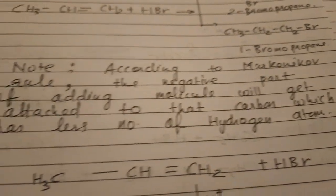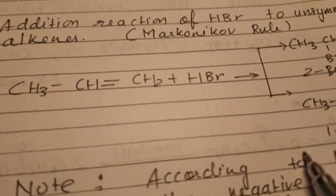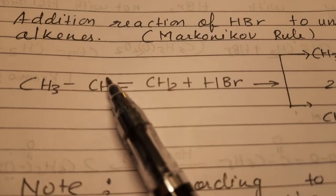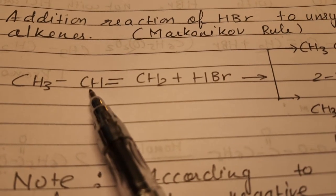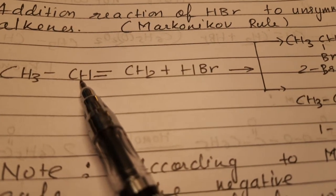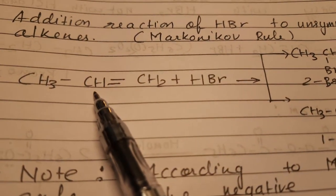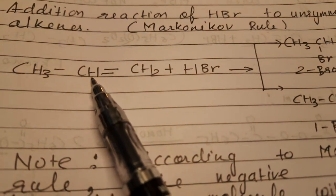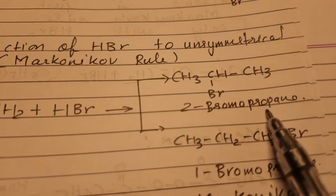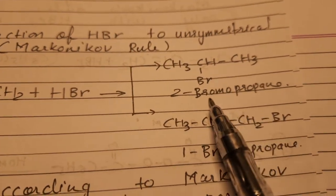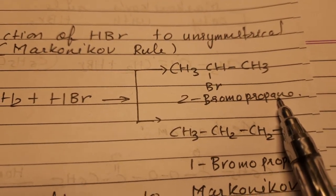In propene, around the double bond, one carbon (CH) has fewer hydrogen atoms. The negative part of HBr is Br, so Br will be added to that carbon. Therefore, 2-bromopropane will be the major product according to Markovnikov's rule.